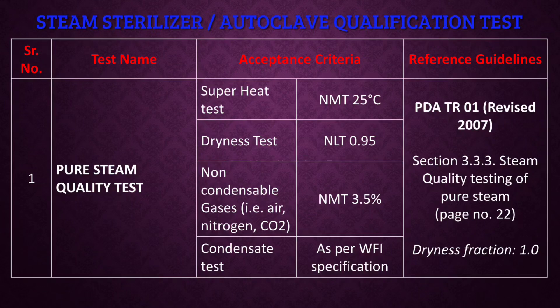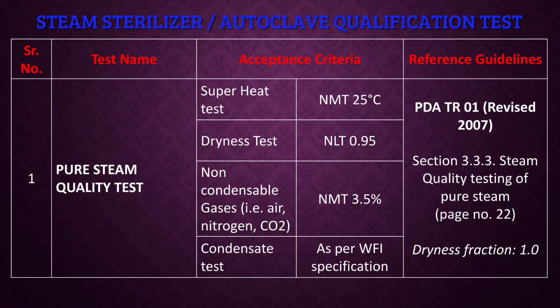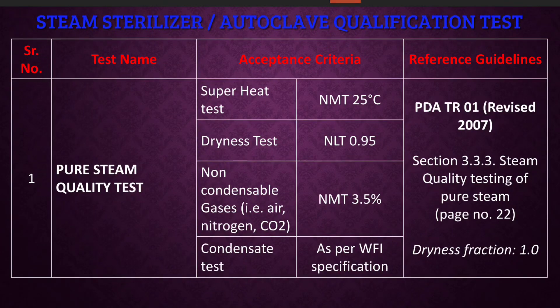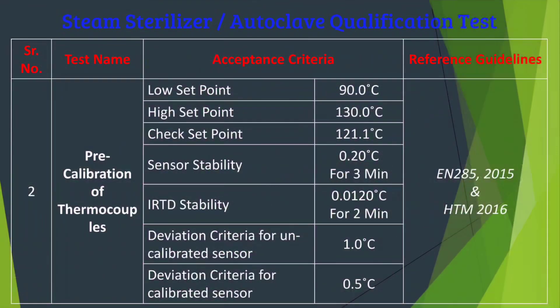The first test is the pure steam quality test, which has four sub-parts: superheat test, dryness test, non-condensable gases test, and condensate test. The acceptance criteria are: superheat not more than 25°C, dryness fraction not less than 0.95, non-condensable gases not more than 3.5%, and condensate test should comply with WFI specification. The reference guidelines are PDA TR-01 (2007) and EN 285.